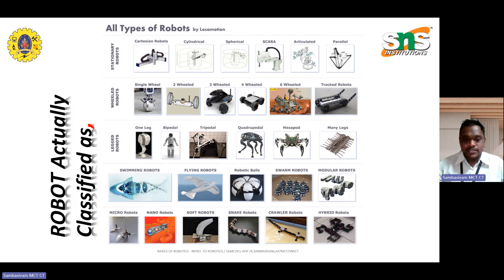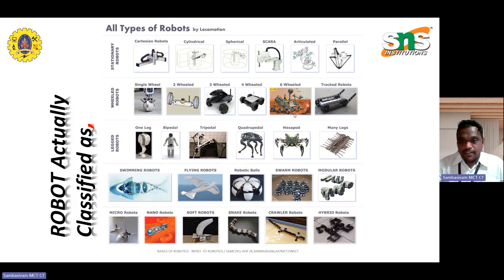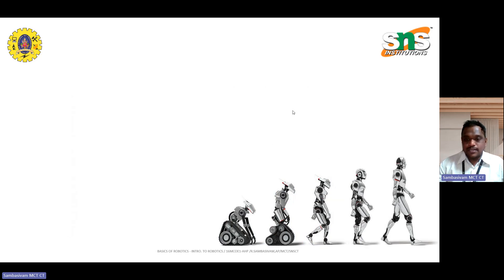Apart from that, various robots are used in swimming, flying, robot balls, swarm robots, modular robots, and micro robots — these are nowadays most popular in industries and used for a variety of purposes. Additionally, there are soft robots, snake robots, crawler robots, and hybrid robots. This is how robots have evolved from a single stage to multiple stages, classified based on different categories and used in industrial sectors based on their conditions and requirements.